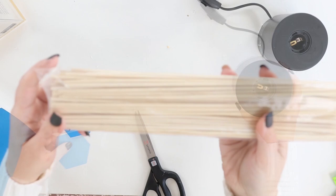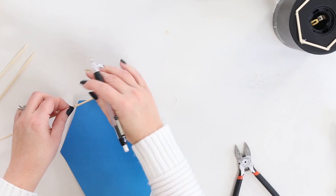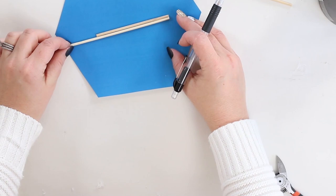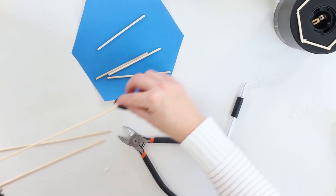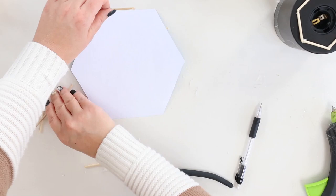Then I grabbed some bamboo skewers from Dollar Tree, and I'm just going to measure them out so that they are going to be the same size as my hexagon when I put them around the edges. I used the hexagon as a template. Then I'm going to hot glue the pieces together.